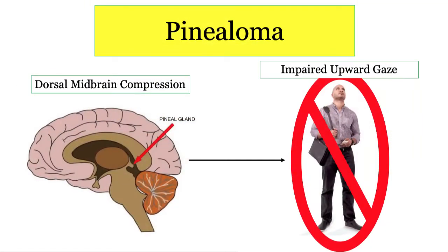Our last major player is the pinealoma. The pineal gland normally secretes melatonin, but don't sleep on the pinealoma. It can grow out and compress the midbrain from the dorsal side, hitting the tectal area. These patients will present with a vertical gaze palsy — an inability to look upwards. Vertical gaze palsy is the language of the pinealoma on the USMLE.